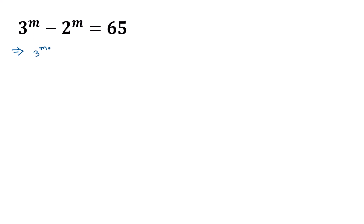3 to the power m can be written as 3 to the power m over 2, all squared — the 2s cancel so it remains 3 to the power m. Similarly, 2 to the power m can be written as 2 to the power m over 2, all squared — the 2s cancel so it remains 2 to the power m. So the equation becomes 3 to the power m over 2, all squared minus 2 to the power m over 2, all squared, is equal to 65.